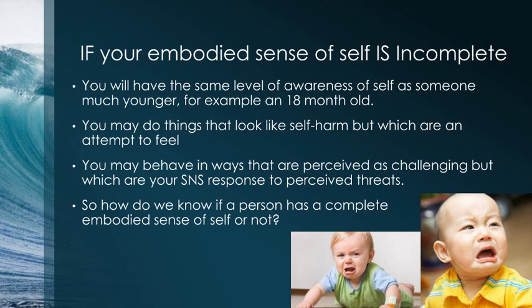Another area that results in challenging behaviour for people with poor or atypical interoceptive awareness is when their sympathetic nervous system response is atypical — they are responding to perceived threats that aren't actually threats, driven by survival behaviour. We will cover that more in part two.